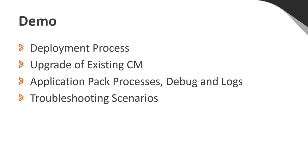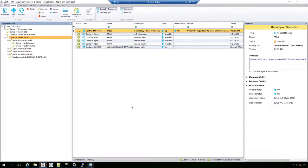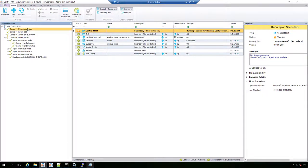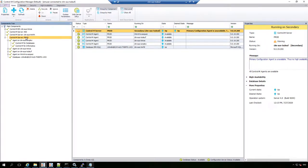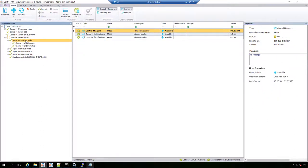In our demonstration today, we will go over the deployment process of the application pack, upgrade an existing control module, look at the processes and debug logs, and go over a couple of simple troubleshooting scenarios. Our demo environment uses a Control-M Enterprise Manager installation on Windows version 9.0.19.200, along with a Control-M server named Prod on the same version and platform, and a Control-M agent on Linux Red Hat 7, also running 9.0.19.200.